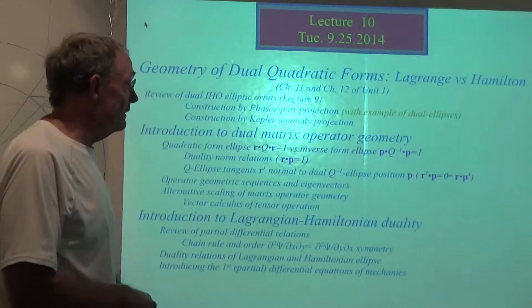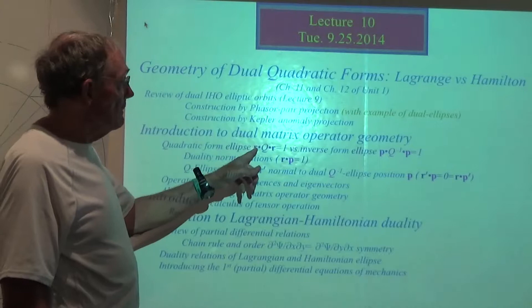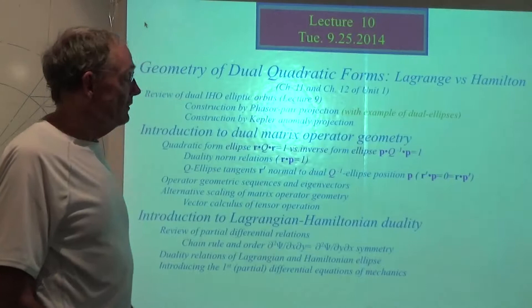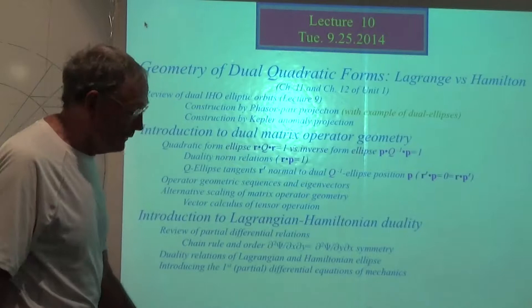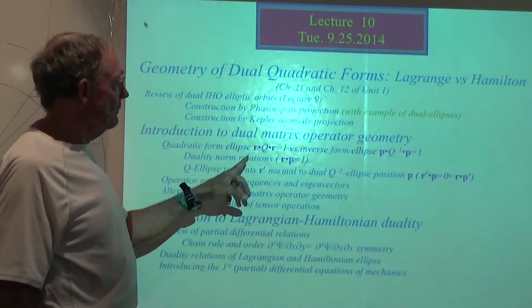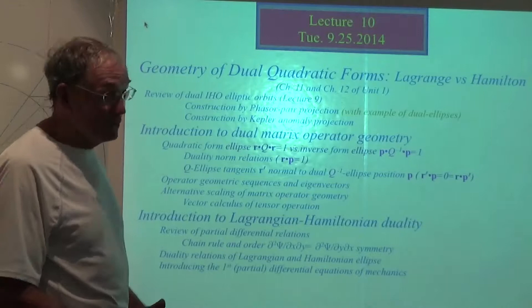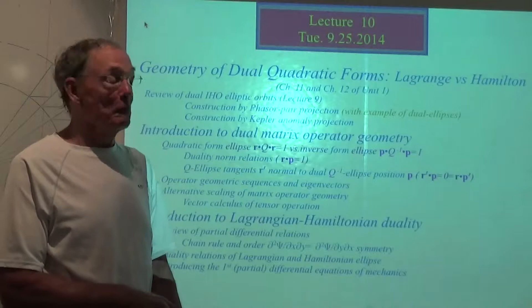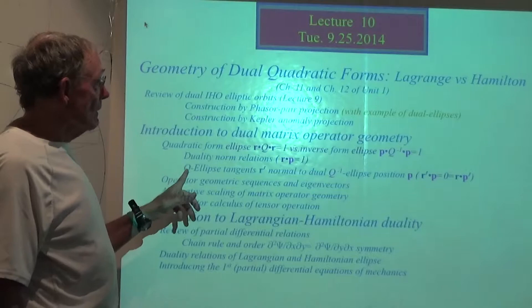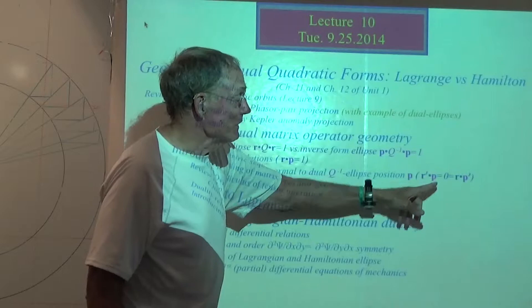We're looking at a two-by-two matrix, similar to ones we've used for bouncing balls. The quadratic form for an ellipse versus the same form with the matrix inverse replacing the matrix itself — Q stands for quadratic. We examine the relationships between vectors on these ellipses: R vectors and P vectors. P stands for perpendicular — the tangent of one ellipse is perpendicular to the vectors on the other. That is one of the key ideas of this elliptical construction.